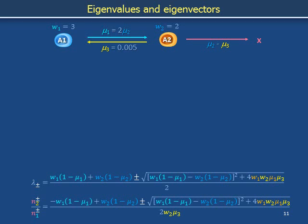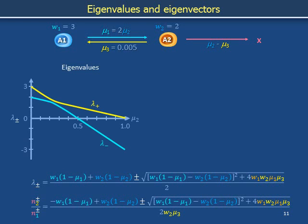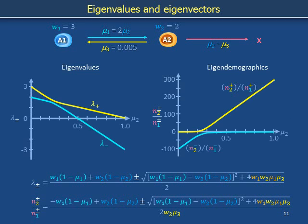We can explore the behavior of the system at different values of mu2. The lambda plus and minus expressed in terms of horrible gobbledygook and square root stuff correspond to these plots. Lambda plus always floats above lambda minus.